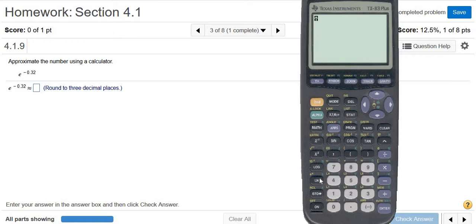So 2nd, ln, negative. You have to use this one. And then 0.32. Parentheses and then enter.